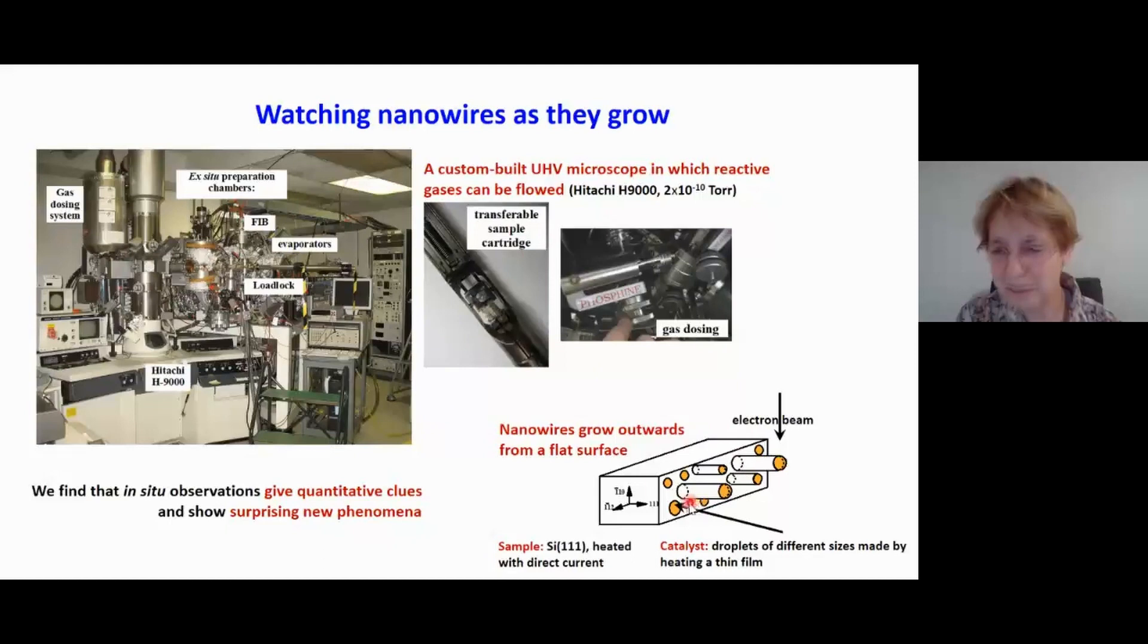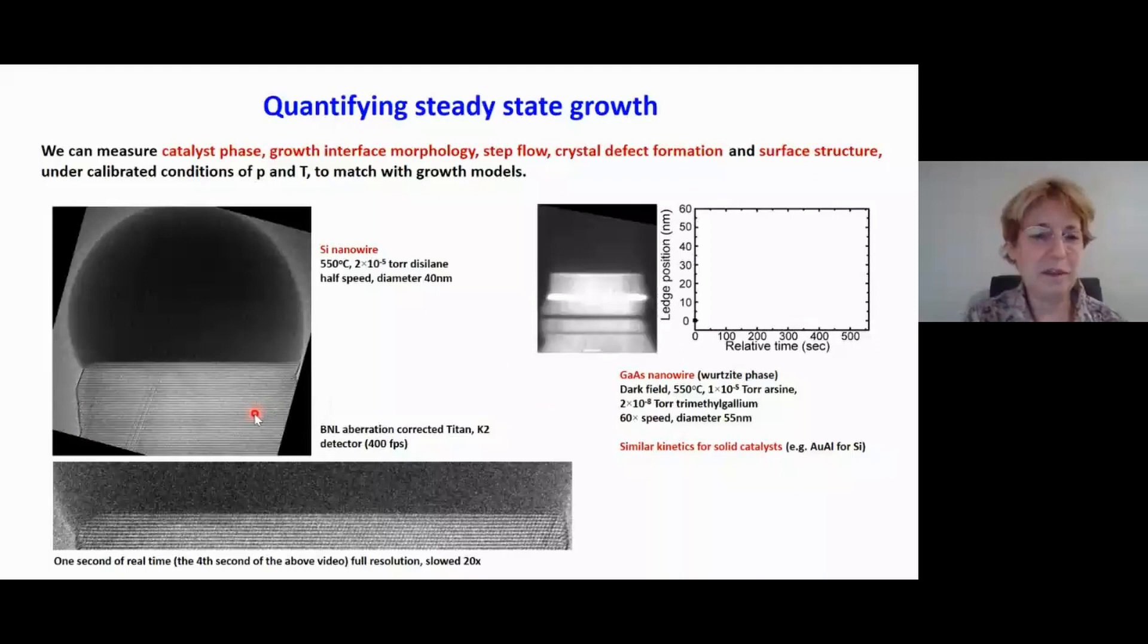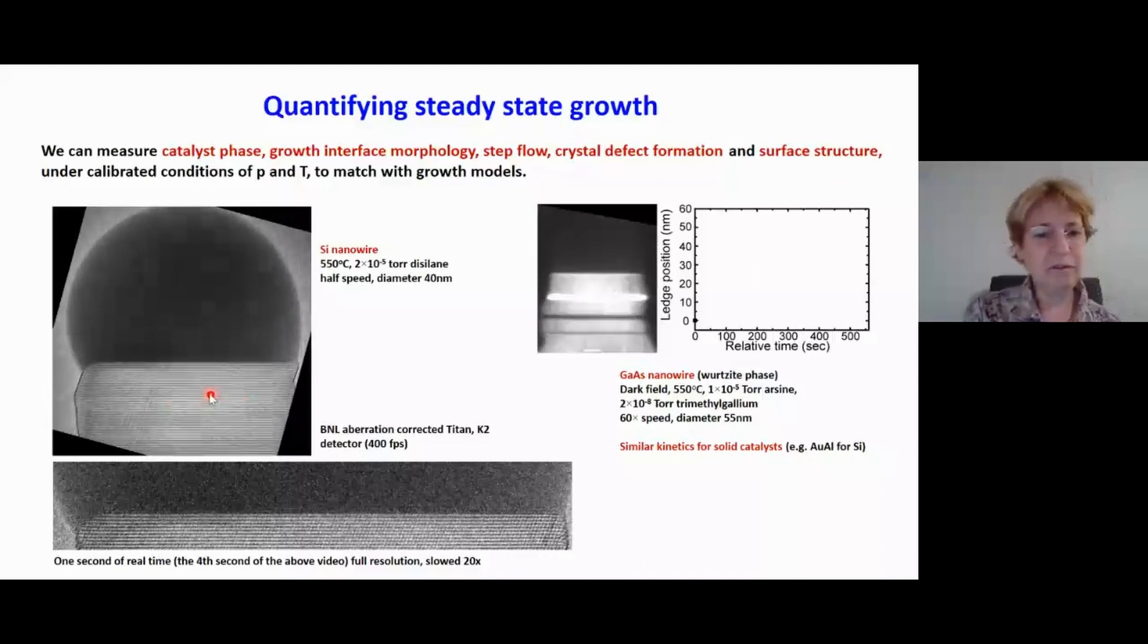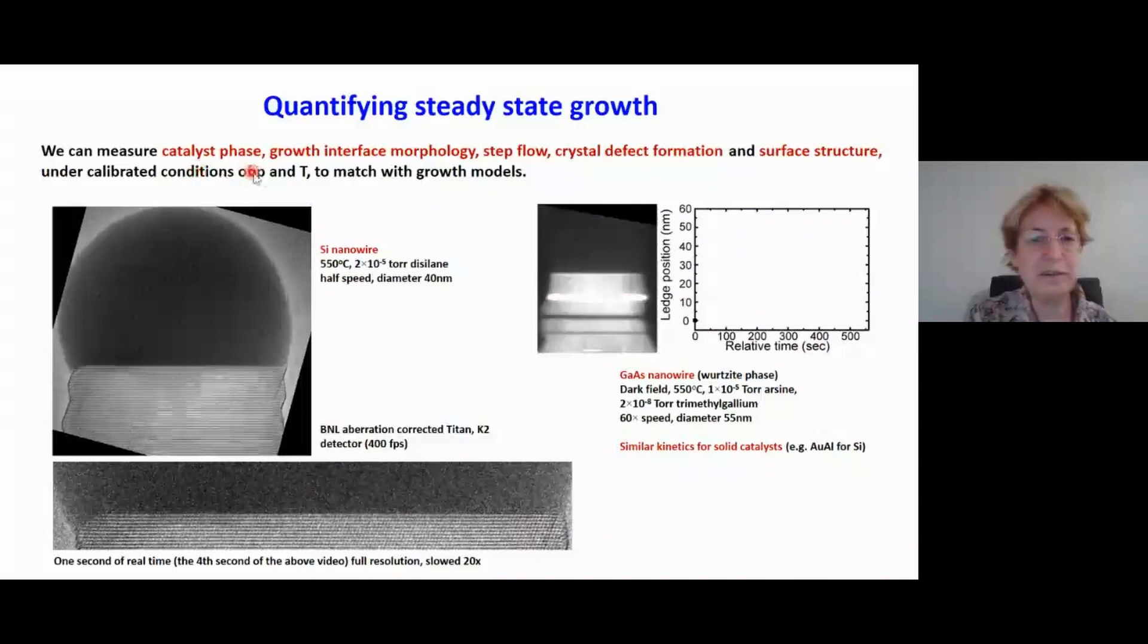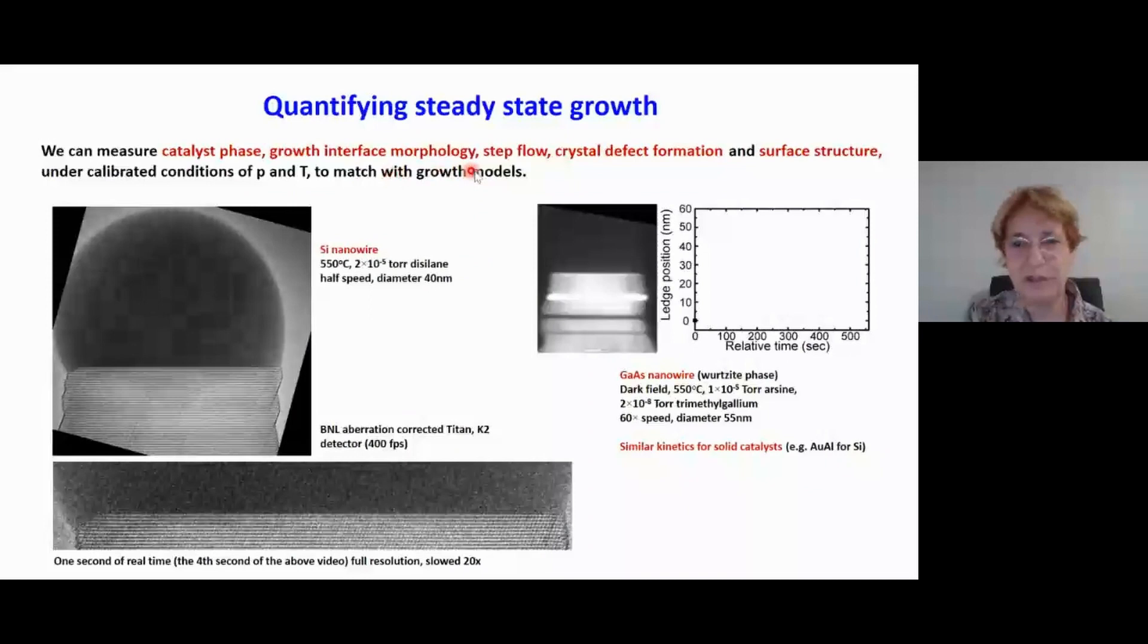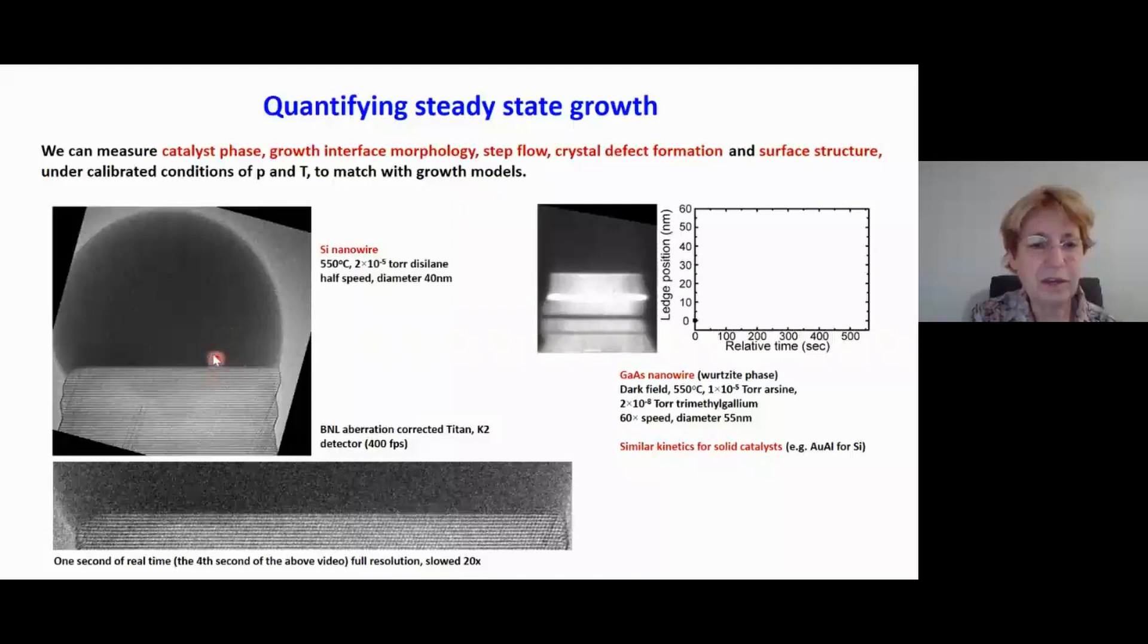What I'm going to show you is that with this kind of equipment, the in-situ observations can give us real quantitative clues, as well as showing things that we didn't expect to see. This is how the sample is set up. The nanowires are growing outwards. The electron beam is coming down vertically, and you get a fabulous view of the growth process taking place. What do we see when we examine these movies in more detail? Here's a silicon nanowire growing. Look at it very closely and what you can see is a kind of pulsing mode of growth. It's not really continuous, it's happening in little jumps. As well as conventional measurements like the phase of the catalyst, the morphology, the growth rate, the kinetics, we can look at the details of how the atoms are added at the interface.